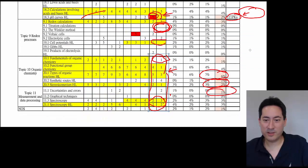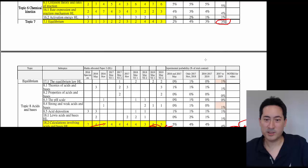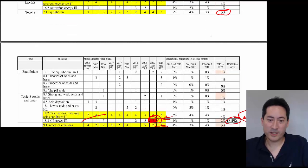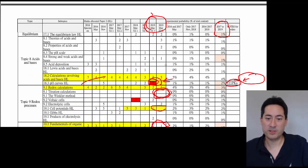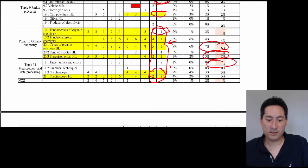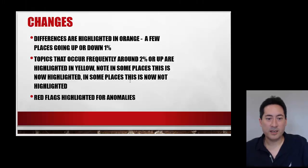So you can see there, if you need to slow down, you can just scroll through and have a quick look again at that analysis. But just once again, what I've added, these two papers, to get a complete overall total of this, and the red flag sort of shows the difference. So just going back to the PowerPoint. Differences are highlighted orange going up and down. Topics that occur frequently around 2% or up are highlighted, and red flags for anomalies.